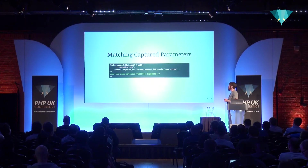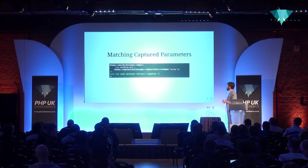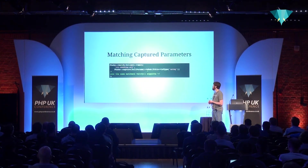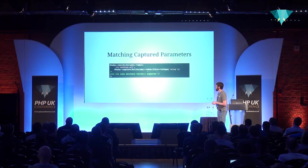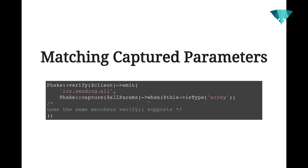In verifications, if you want to capture parameters but also perform constraint checks on them at the same time, you can do both. I'm capturing all params and inline in the when call I'm passing a constraint — in this case the isType constraint specifying it should be an array, one of PHPUnit's constraints. That constraint will be applied to the parameter when captured, and if it doesn't match, the verification test will fail.